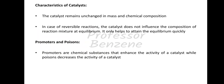Promoters are chemical substances that enhance the activity of a catalyst, while poisons are substances that decrease the activity of a catalyst. Promoters increase activity, while catalyst poisons reduce it.